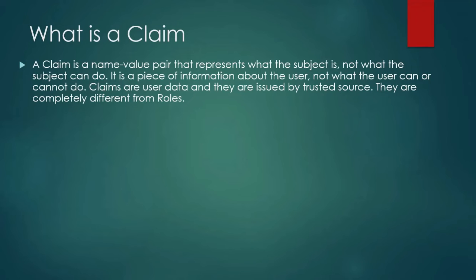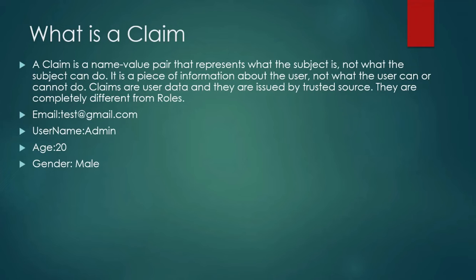Claims are user data and they are issued by a trusted source, so they are completely different from roles. A claim can be anything — for example, a name, email address, phone number, age, or gender. From our definition, it is a name-value pair: the name is 'email' and the value is 'test@gmail.com'; the name is 'username' and the value is 'admin'; the name is 'age' and the value is '20'; the name is 'gender' and the value is 'male'. These are claims — a piece of information about the user.